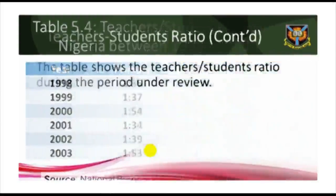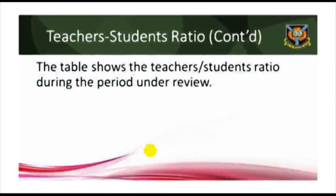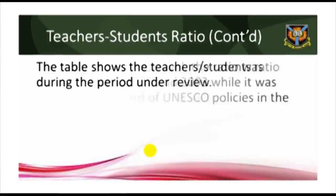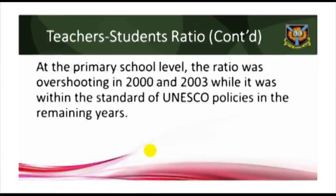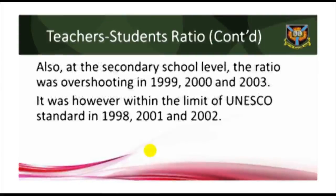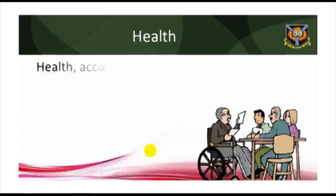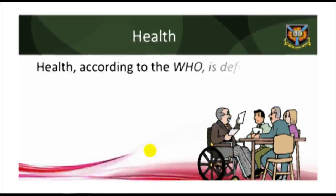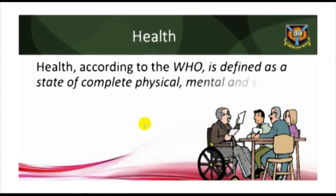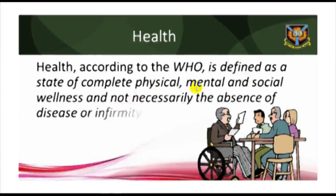Health: According to the World Health Organization, health is defined as a state of complete physical, mental, and social wellness, and not necessarily the absence of disease or infirmity. The WHO uses indicators to measure health such as infant and child mortality rate, disease burden, and disability-adjusted life years.